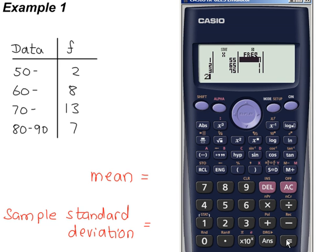Scroll to the right, enter the frequencies. So the first one is 2. Press equals after each one. And then check your data.